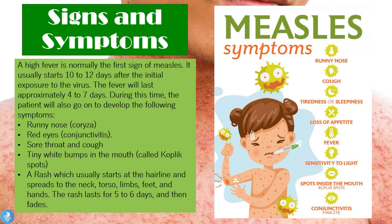A high fever is normally the first sign of measles, and it usually starts 10 to 12 days after initial exposure to the virus. The fever lasts approximately four to seven days. During this time, patients also develop flu-like symptoms, which include runny nose — known as coryza — red eyes, which is conjunctivitis, and a sore throat and cough.